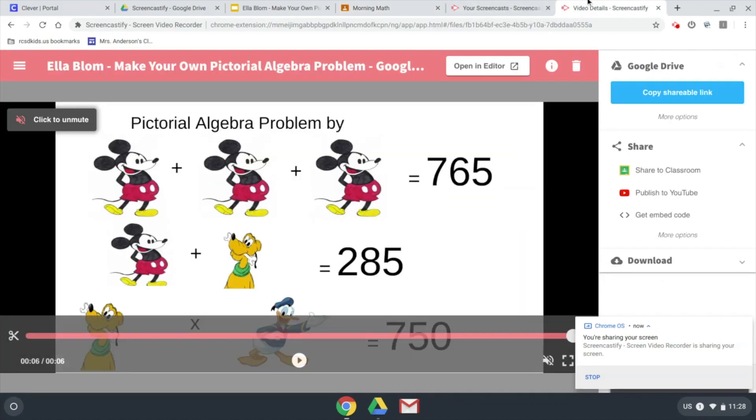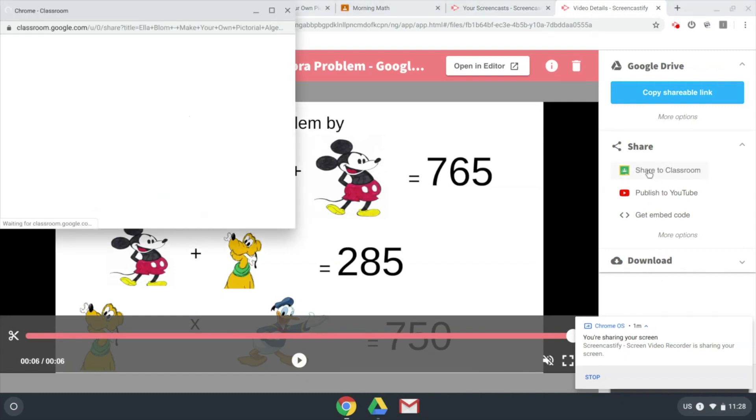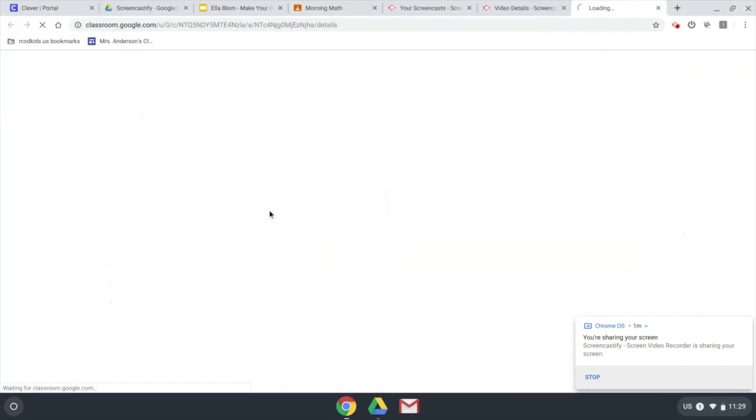The other option is right here in my video, I can share directly to Classroom. So I click on that and I have to choose a class. For middle school students especially, this is helpful trying to find what class you're a part of. Then I can choose the assignment, press Go, and then I can attach it.